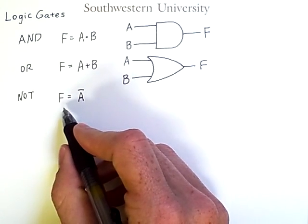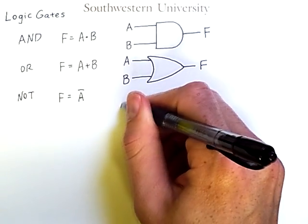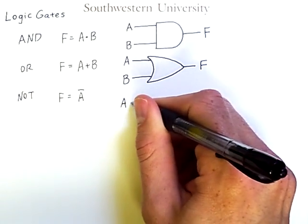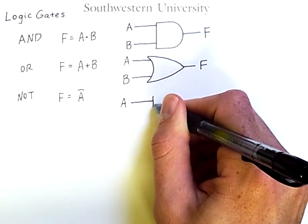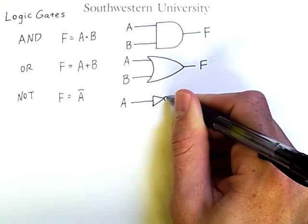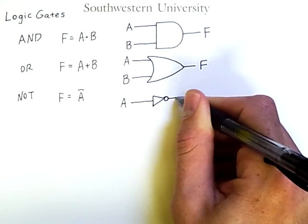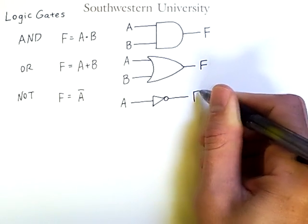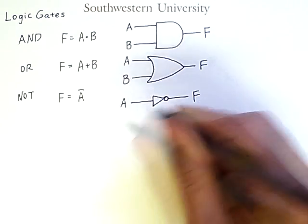Now the NOT gate only has a single input, A, and we draw that gate with a triangle, and then a little circle here. So this result F is NOT A.